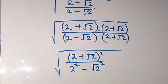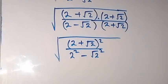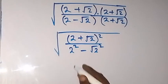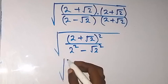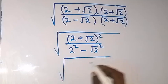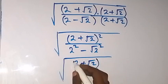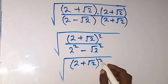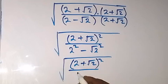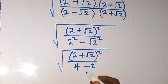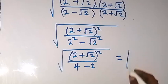From here, this is square root of (2 plus root 2) squared, over 4 minus 2. And 4 minus 2 is 2, so this is the same as square root of (2 plus root 2) squared over 2.